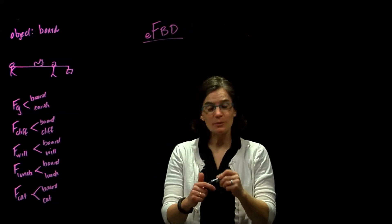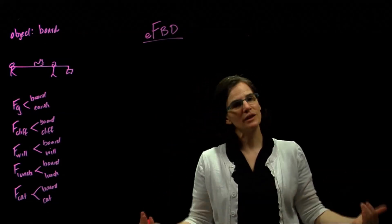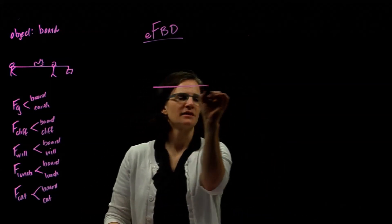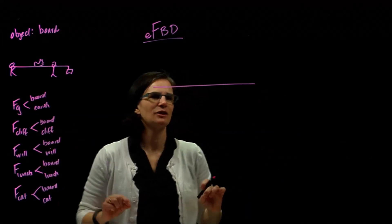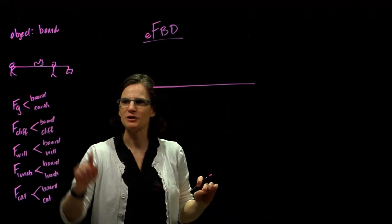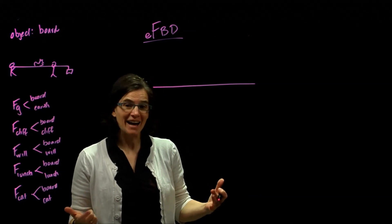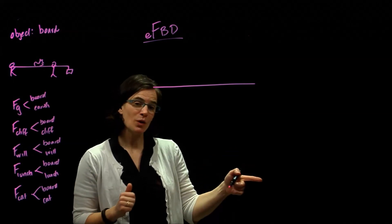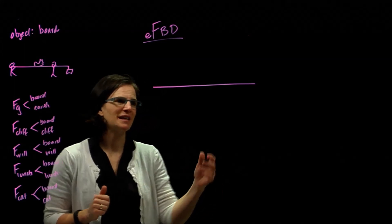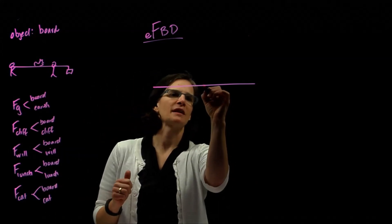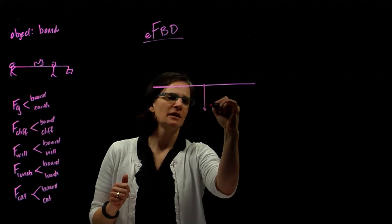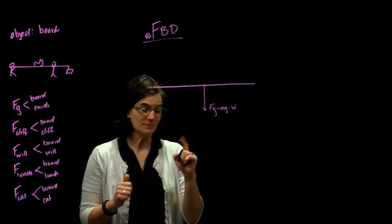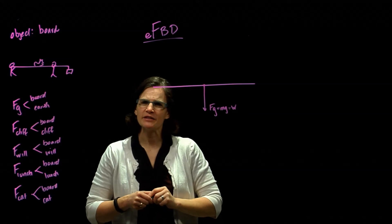In an extended free body diagram, we need to look at both the force and where the force is acting. We draw our board as a straight line — we've extended the dot to look at interactions at specific locations. Gravity acts at the object's center of mass. We're told the board is uniformly distributed, so the center of mass is at the geometric center, right in the middle of the board. The force of gravity acts straight down and equals the weight, MG.